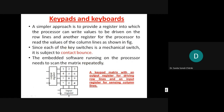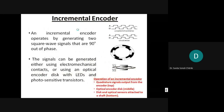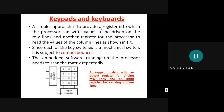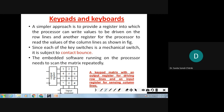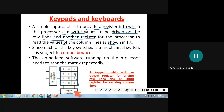A simpler approach is to provide a register into which the processor can write the values to be driven on the row lines, and another register for the processor to read the values from the column lines. So for the keypad matrix, one output register is used to drive the rows and one input register is used to sense the columns, allowing detection of which row and column is activated.